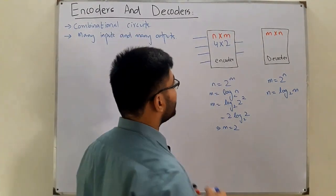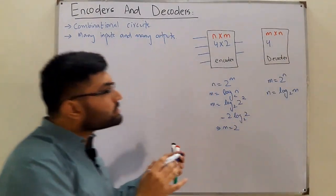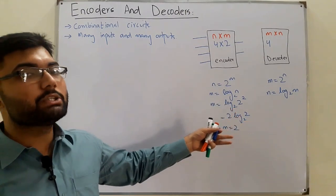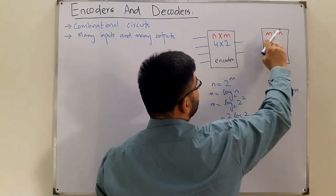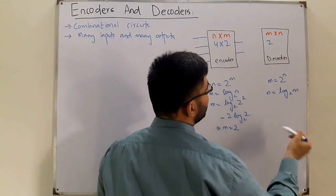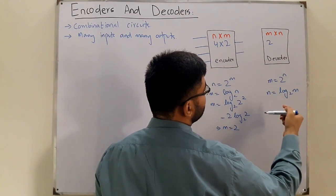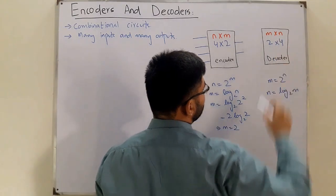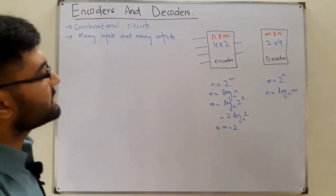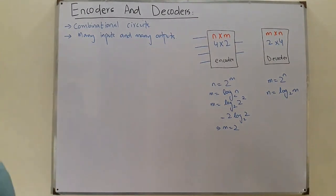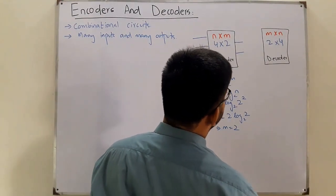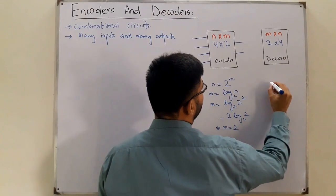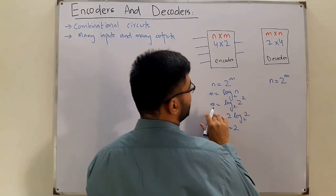The output of the encoder feeds into the decoder. So the decoder has m = 2 input lines and n = 4 output lines. To clarify the formula: for the encoder, n = 2^m — n is the number of inputs and m is the number of outputs.